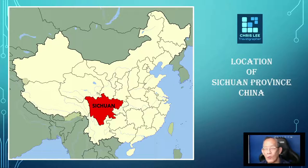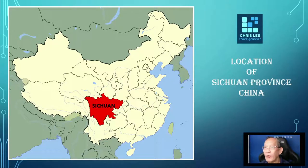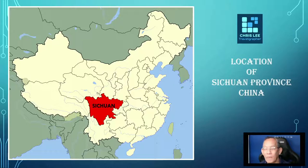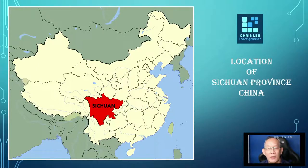For those who are not familiar with China, let's look at the maps in front of you. Sichuan is shown in red on this map. It is a landlocked province in southwest China, and it occupies most of the Sichuan Basin and also the easternmost part of the Tibetan Plateau. The capital city of Sichuan is Chengdu.